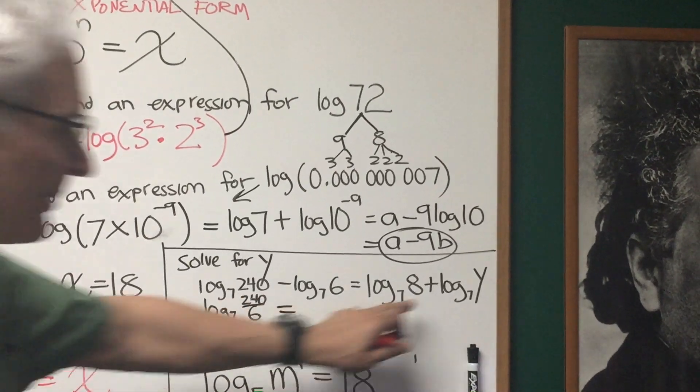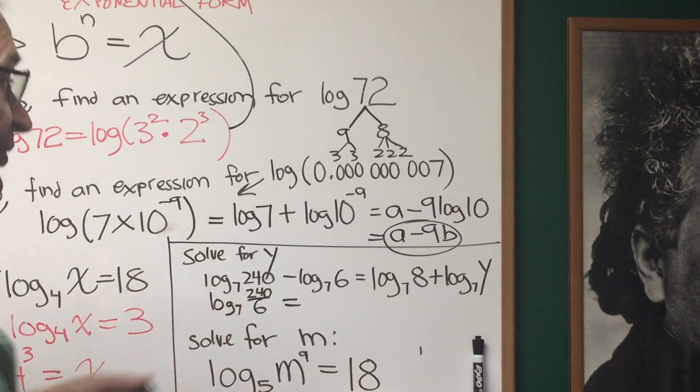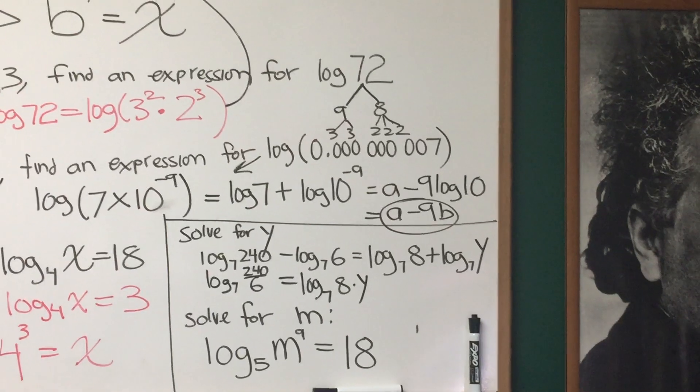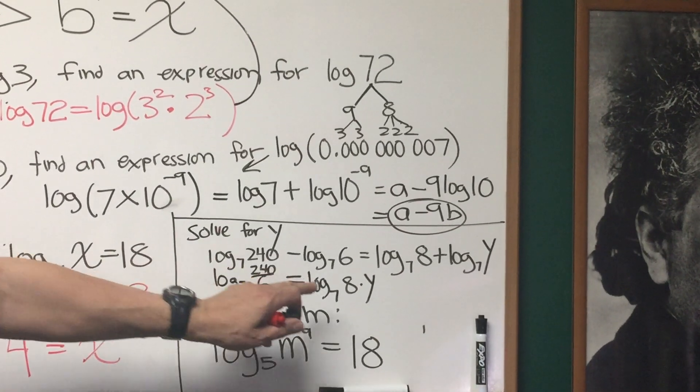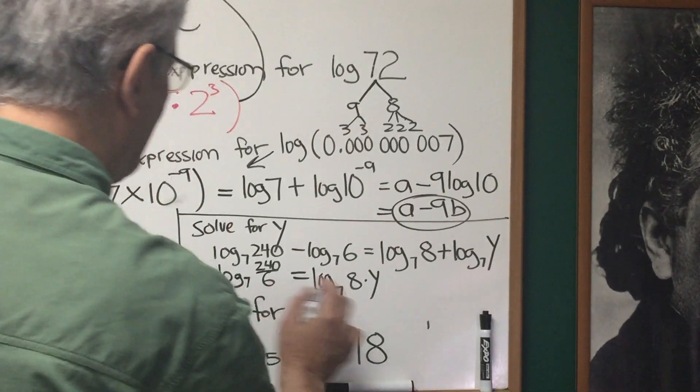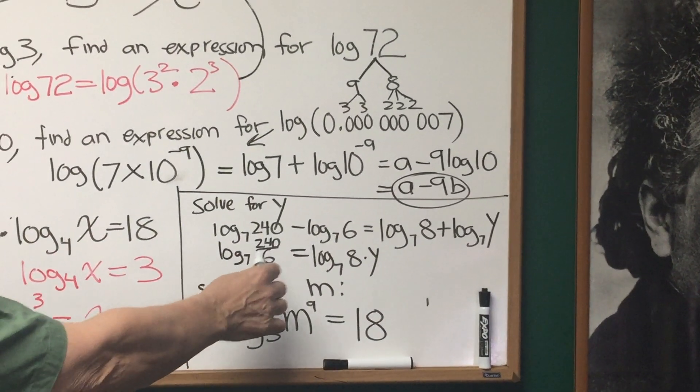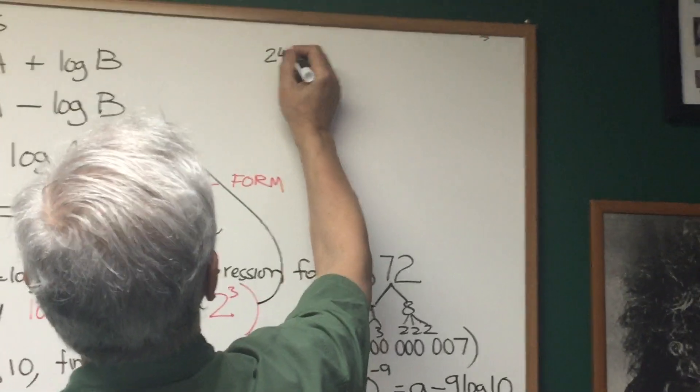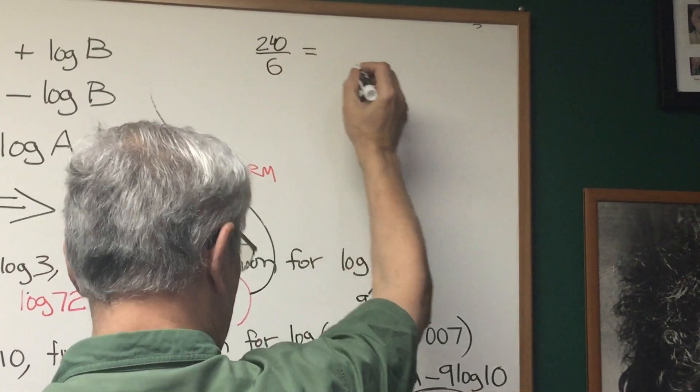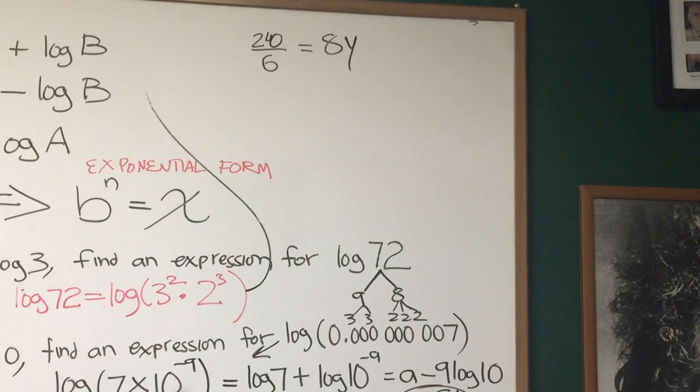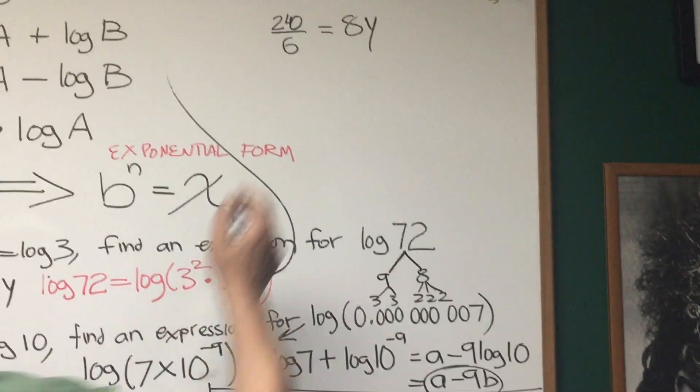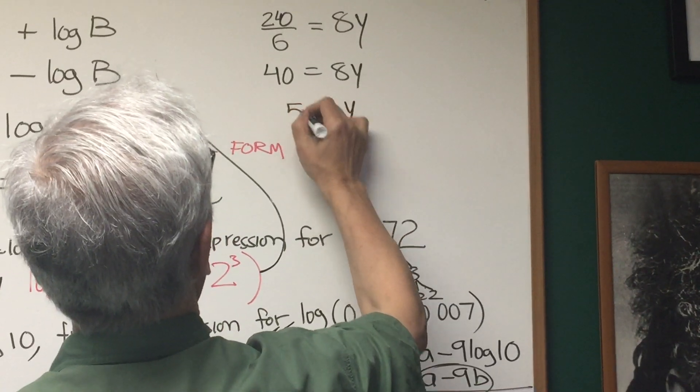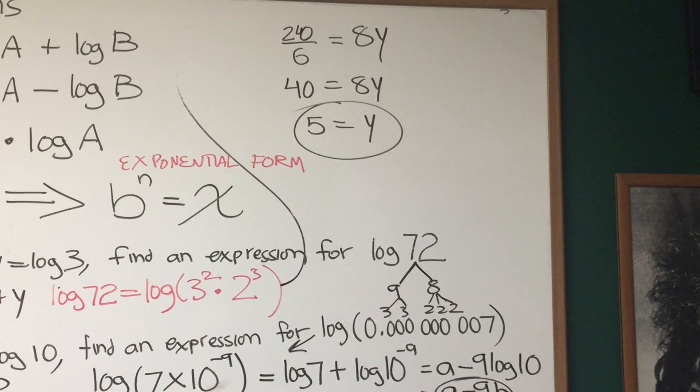On the right side of the equation, the sum of the logs is going to convert to the log of the product of those values, the log base 7 of 8 times y. So here we have the log base 7 of 240 over 6 equals the log base 7 of 8y. If I take the anti-log of both sides, I can write 240 over 6 is equal to 8 times y. If the logarithms of the two values are equal, then the quantities themselves are equal. So this is equal to 40 equals 8y, and therefore the value of y is equal to 5.